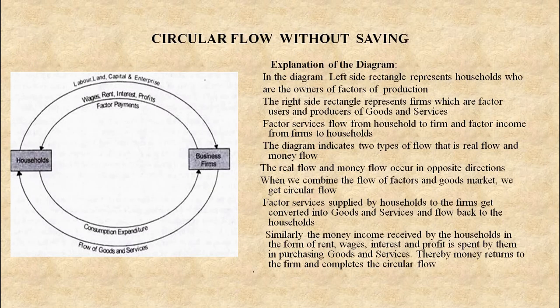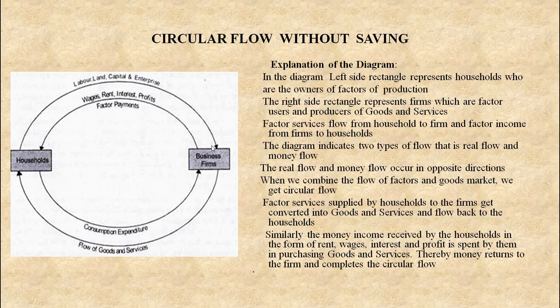By now it must be clear that there are two sectors in the economy. I will explain it with the help of a diagram. In the diagram, the left side rectangle represents households who are the owners of the factors of production. The right side rectangle represents firms, which are factor users and producers of goods and services. Factor services — that is land, labor, capital and enterprise — flow from households to business firms, and factor income flows from firms to households. This factor income is in the form of wages, rent, interest and profit.